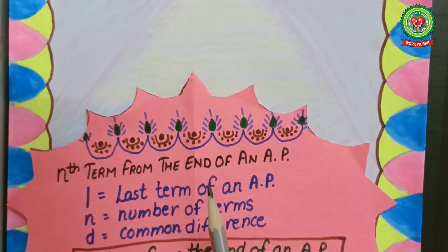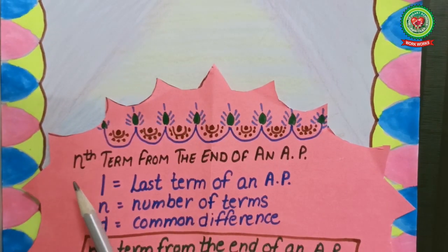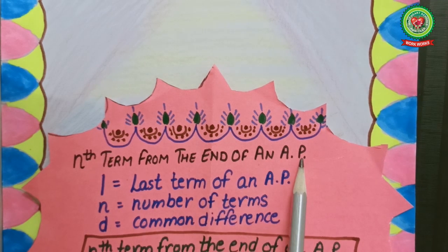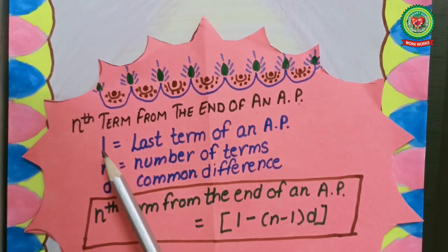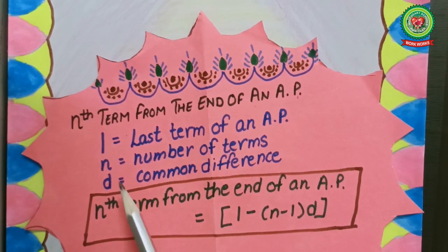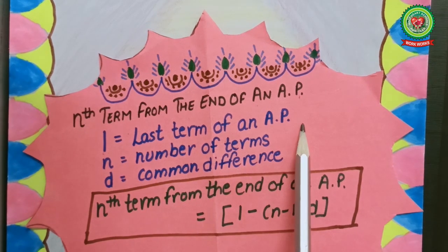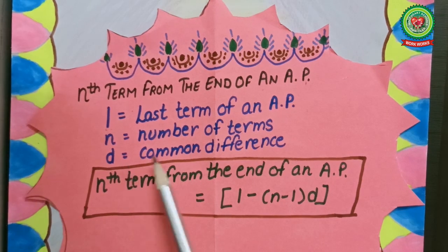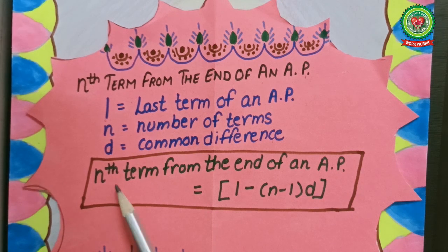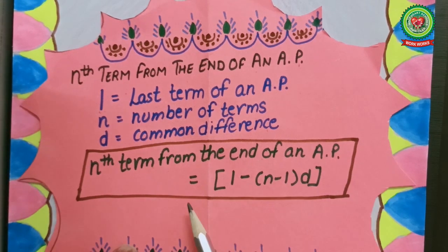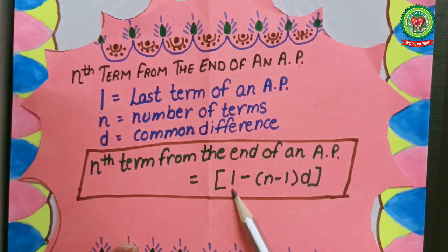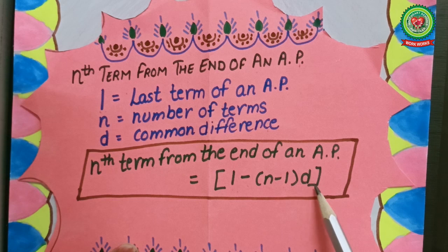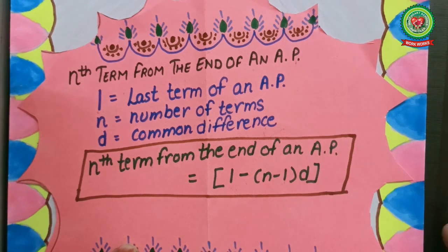We are now going to start with the topic: nth term from the end of an AP. When we have a sequence but start from the last term, we use a different formula. Here l stands for the last term of the AP, n is the number of terms, and d is the common difference. The formula is: nth term from the end of an AP equals l minus (n minus 1) into d, where l is the last term minus number of terms minus 1, multiplied by the common difference.